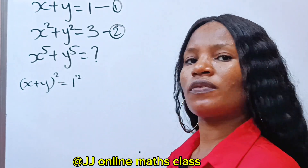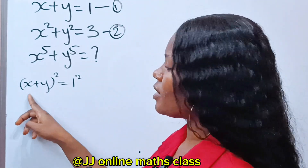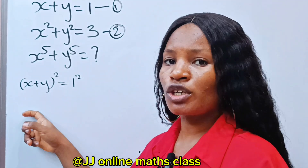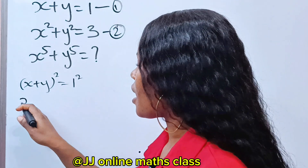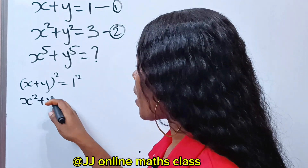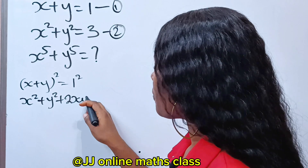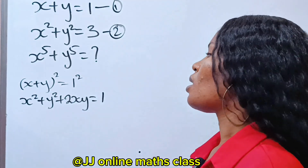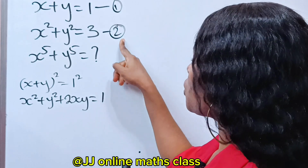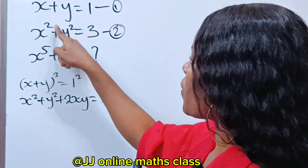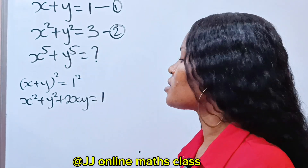If we square both sides of this equation, we are going to have — this is an identity, and according to this algebra identity — this is the same thing as x squared plus y squared plus 2xy, is equal to 1 because 1 squared will still give us 1. Recall from equation 2 that x squared plus y squared is equal to 3.